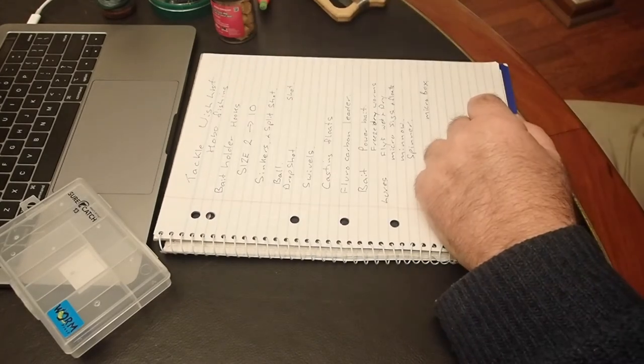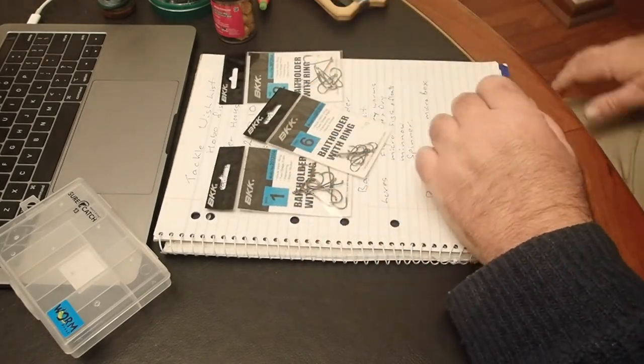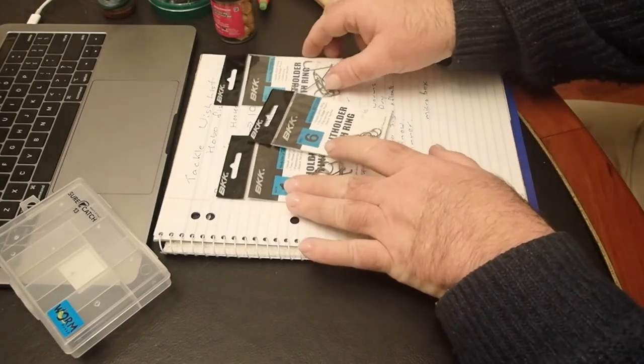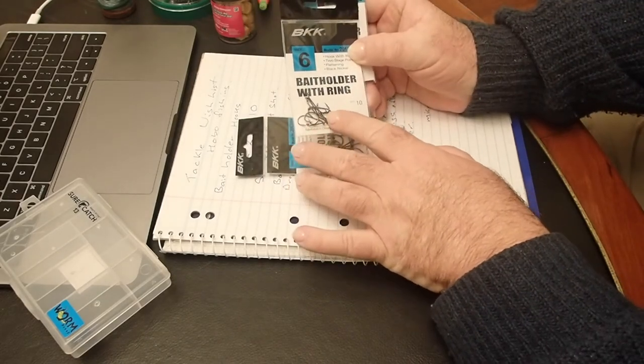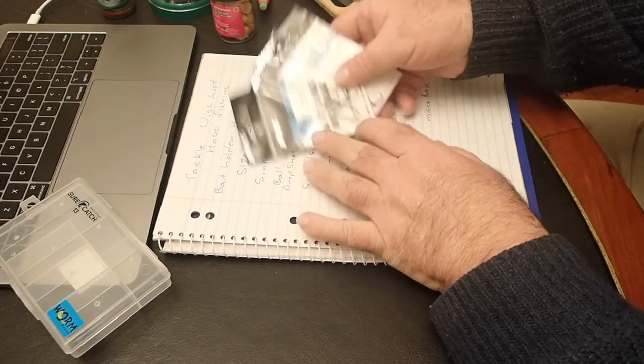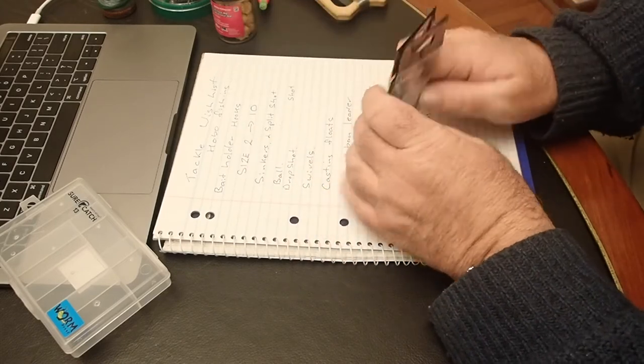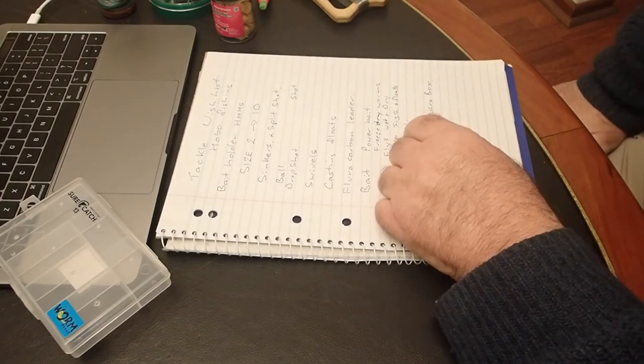What I would like in the kit is hooks. With line and hooks you're fishing, without line and hooks you're not fishing. Good quality, these are bait holder hooks, so that means they've got barbs on them so if you're catching grasshoppers and worms and stuff, they tend to stay on. The size is 2 to 10 and maybe a couple of really small ones for catching bait.